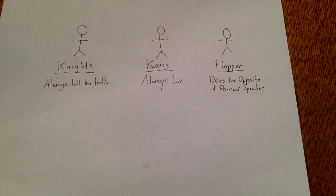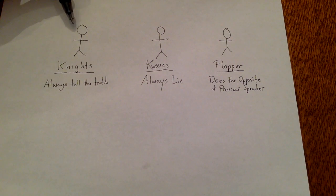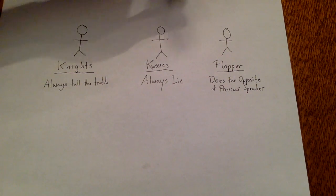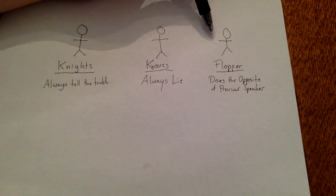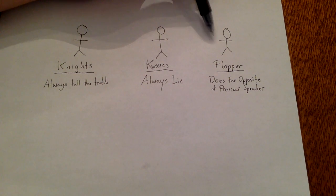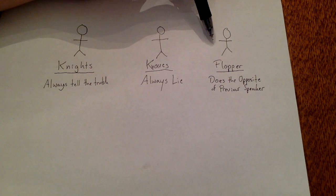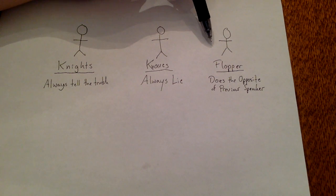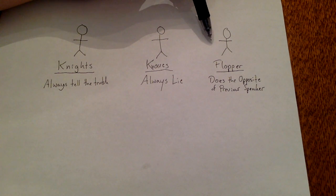Let's talk about a modification of the knights and knaves puzzle. In this world, we're going to have knights, which always tell the truth, knaves, which always lie, and floppers, which do the opposite of the previous speaker. So if the previous speaker lied, they'll tell the truth. If the previous speaker told the truth, then they'll lie. If they're the first speaker, you don't know which conversations they were in the past, so they could either tell the truth or lie.